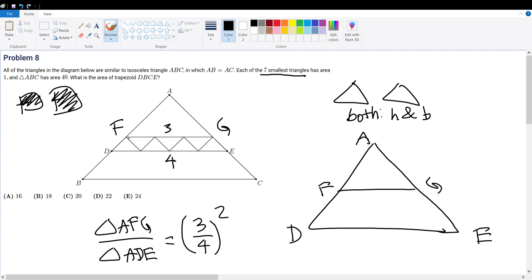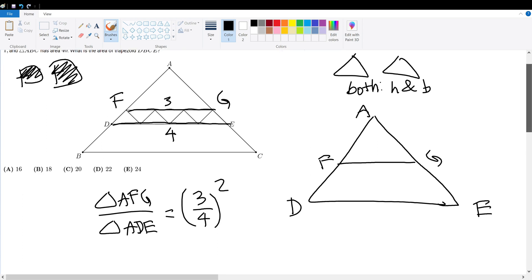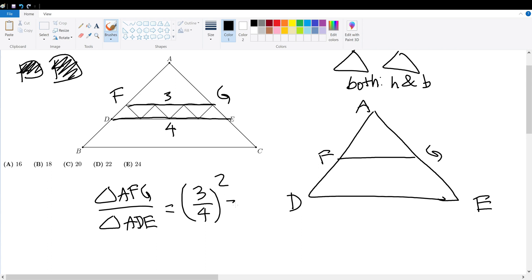In this case, the base of both triangles are given to us, and we know their ratio being 3 to 4, with 3 corresponding to the AFG side and 4 corresponding to the ADE side. But if we were to square it, that would give us the correspondence of the two triangles' ratios. So in this case, if we were to simplify, this would be equal to 9 over 16.